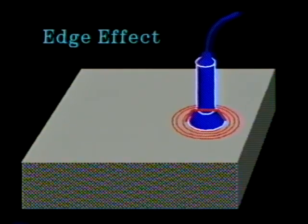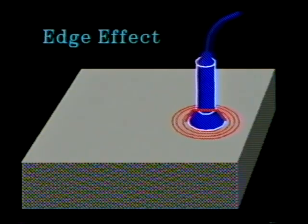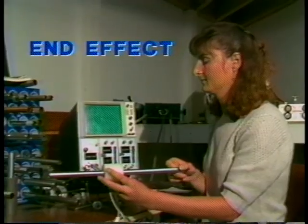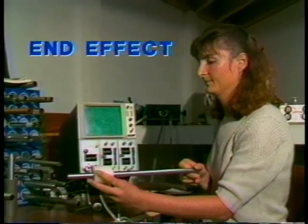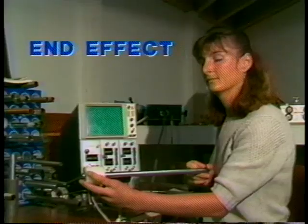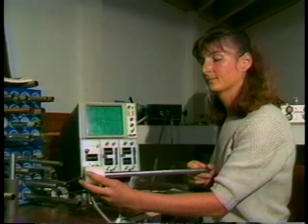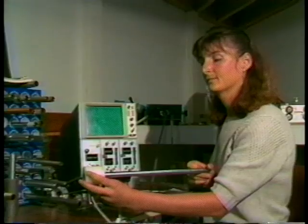Edge effect is a term most applicable to the inspection of sheets or plates with a probe coil. End effect follows the same logic as edge effect. End effect is the signal observed when the end of a product approaches the test coil. Response to end effect can be reduced by coil shielding or reducing coil length in outside diameter and encircling or inside diameter bobbin coils. End effect is a term most applicable to the inspection of bar or tubular products.